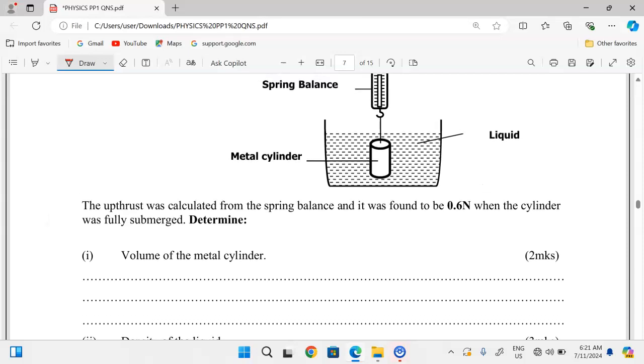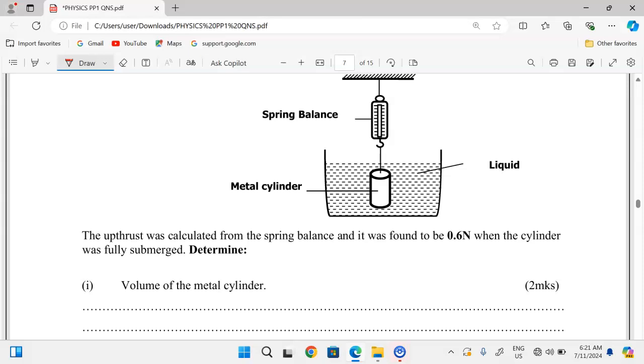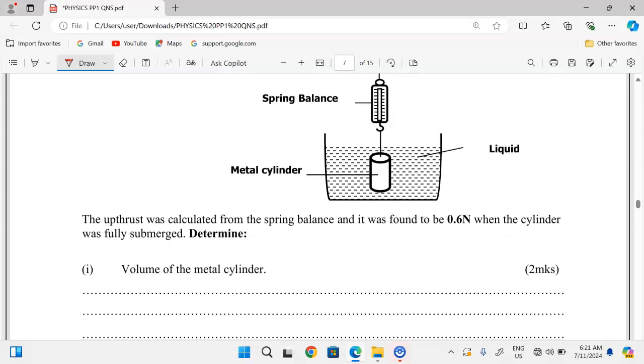So to calculate this upthrust just in a nutshell, that means first of all for the metal cylinder, the real weight had been obtained, the weight in air. Then when fully immersed, the apparent weight, that is the new reading on the spring balance, was also determined. The difference between the real weight of a substance and the apparent weight when it has been immersed in a fluid gives the upthrust in the particular fluid. So for our case here, the upthrust was found to be 0.6 newtons.